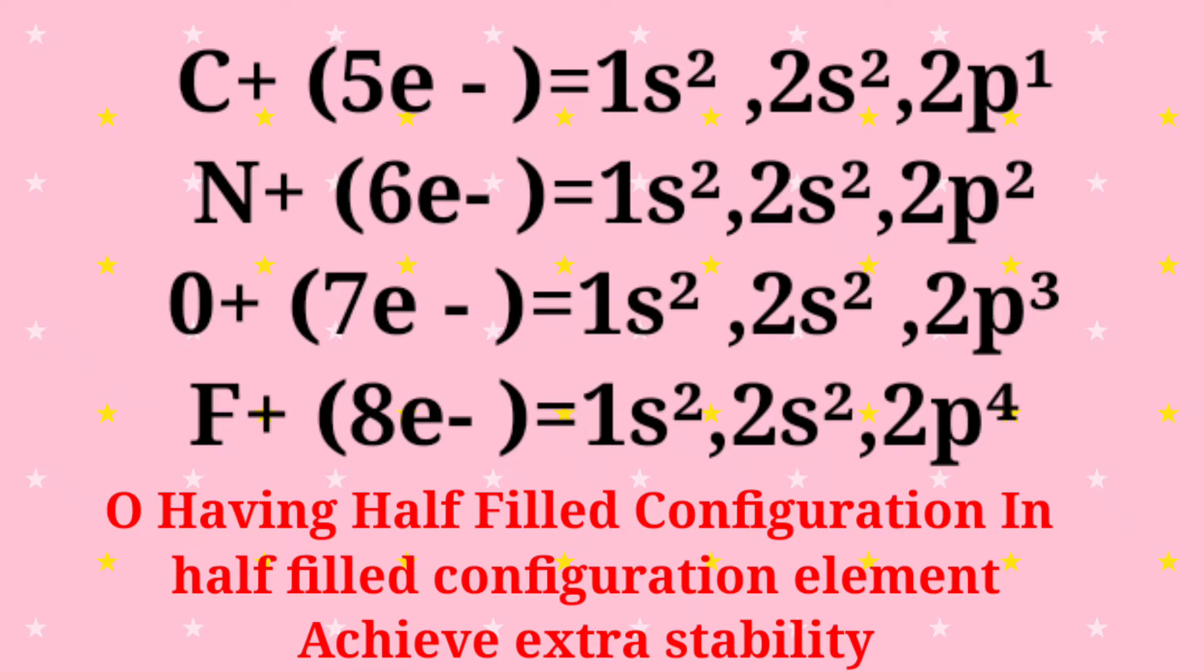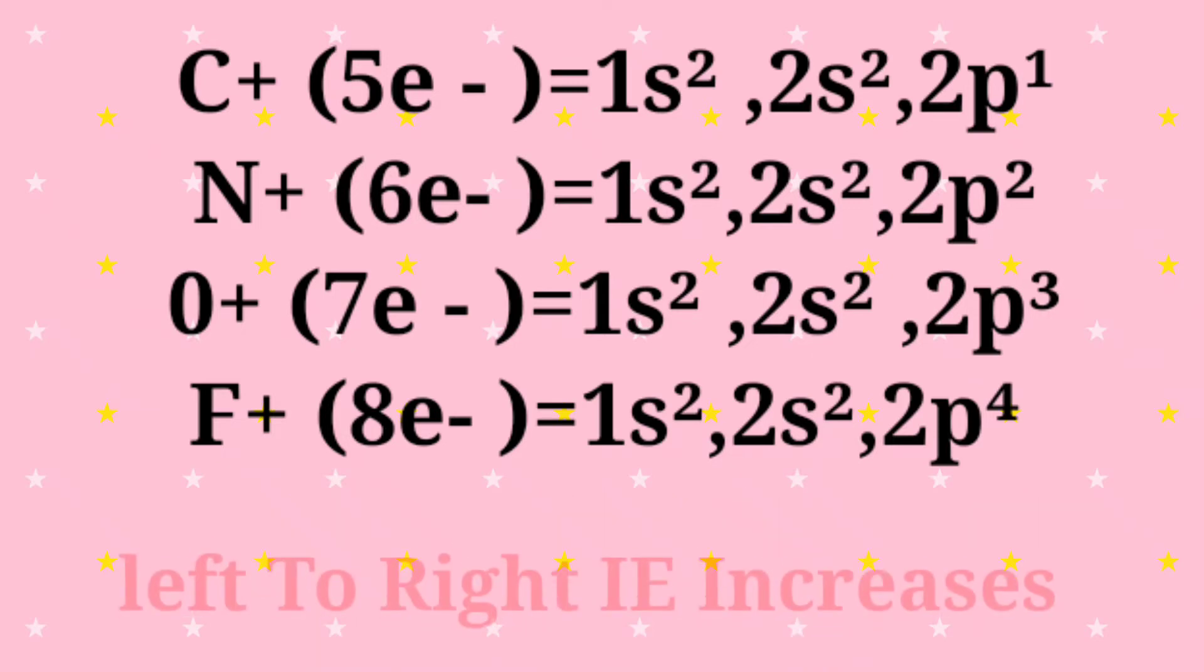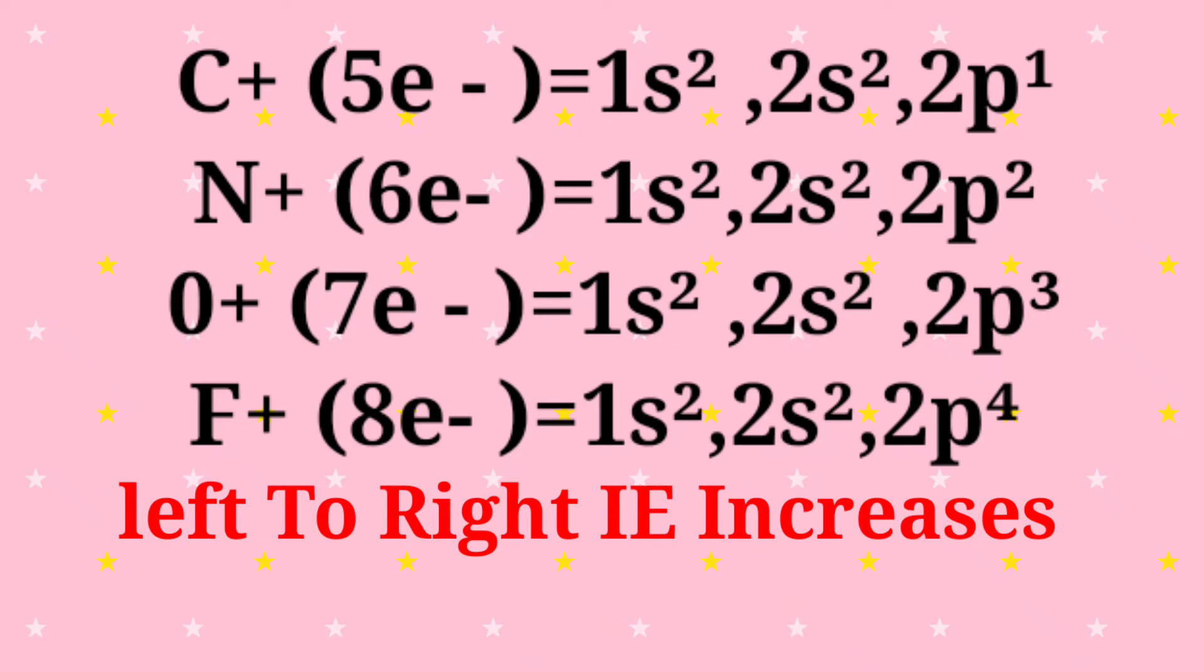In this configuration O+ achieves extra stability. Due to the extra stability of the half-filled configuration, more energy is required to remove an electron from the valence shell of monopositive cation oxygen. Hence, the second ionization energy of monopositive cation oxygen is greater.